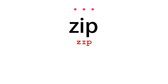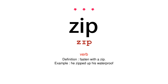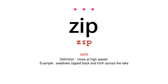Zip. Verb. Definition: Fasten with a zip. Example: He zipped up his waterproof. Definition: Move at high speed. Example: Swallows zipped back and forth across the lake.